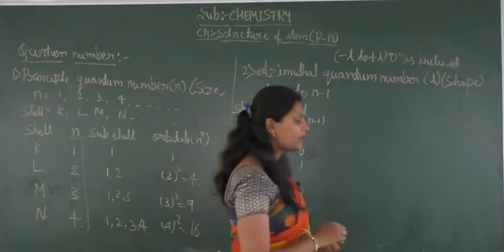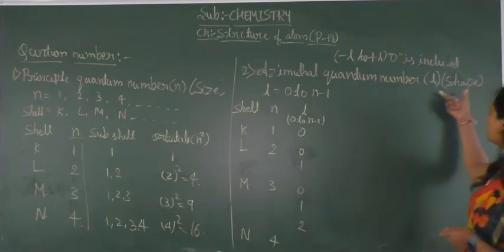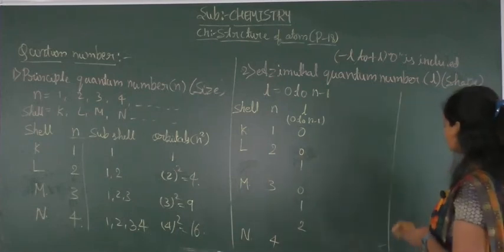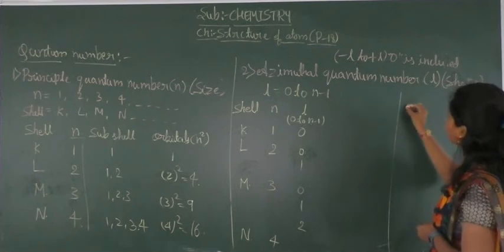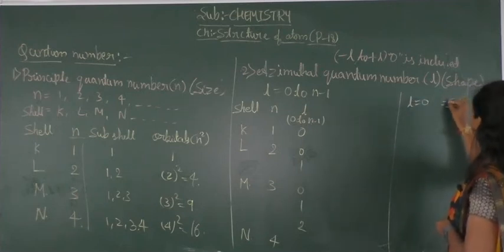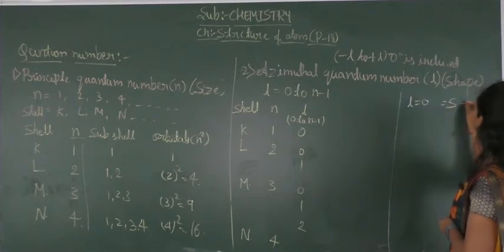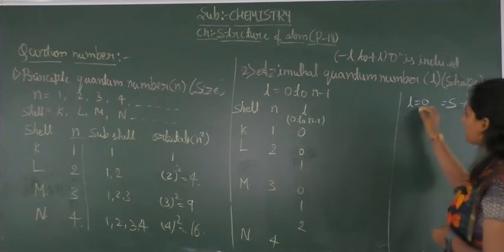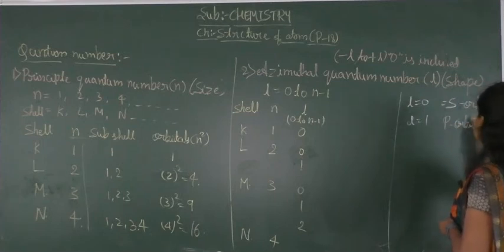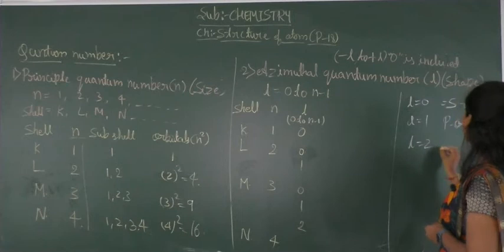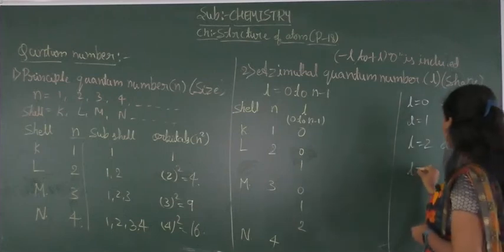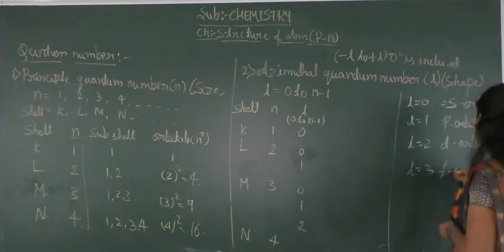The azimuthal quantum number explains the shape of the orbital. If the l value is 0, that means it is an S orbital. If the l value is 1, that is the P orbital. If the l value is 2, that is the D orbital. If the l value is 3, that is the F orbital.